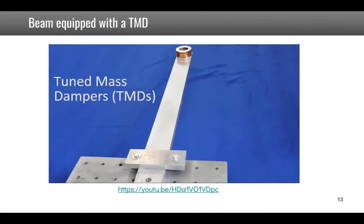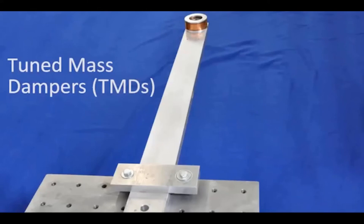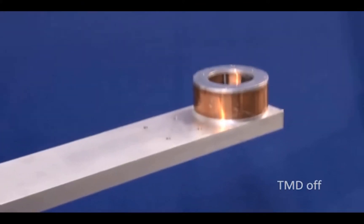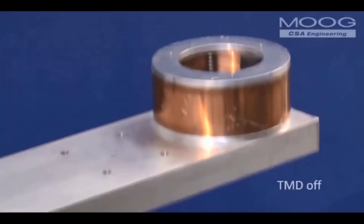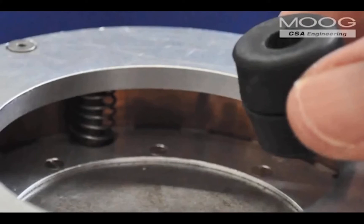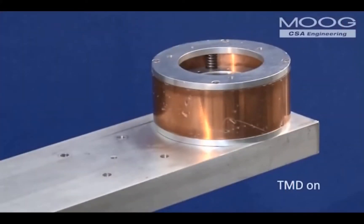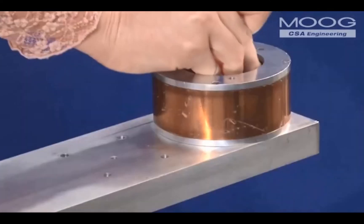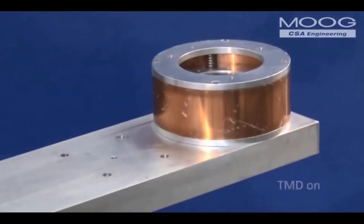Another means of adding damping to a structure is to use a tuned mass damper, or TMD — a simple passive device that can eliminate undesirable motion due to resonant vibration. The TMD is attached to the point on the structure where vibration-induced displacements are largest; here it is attached to the end of a cantilevered aluminum beam. With the TMD turned off using a rubber stopper, the beam's first bending mode vibration dies out very slowly when struck. With the TMD activated, the vibration is highly damped and the motion dies out in two to three cycles.